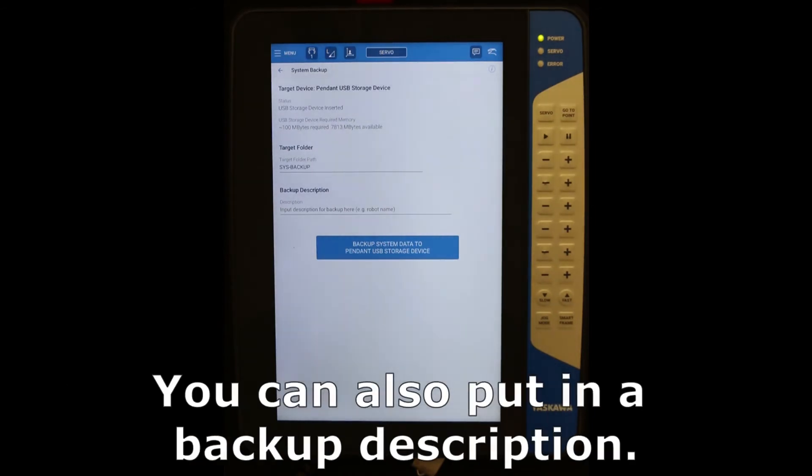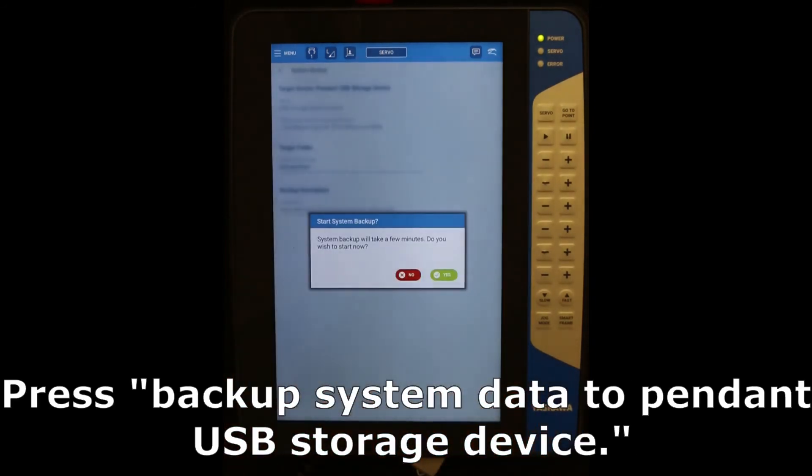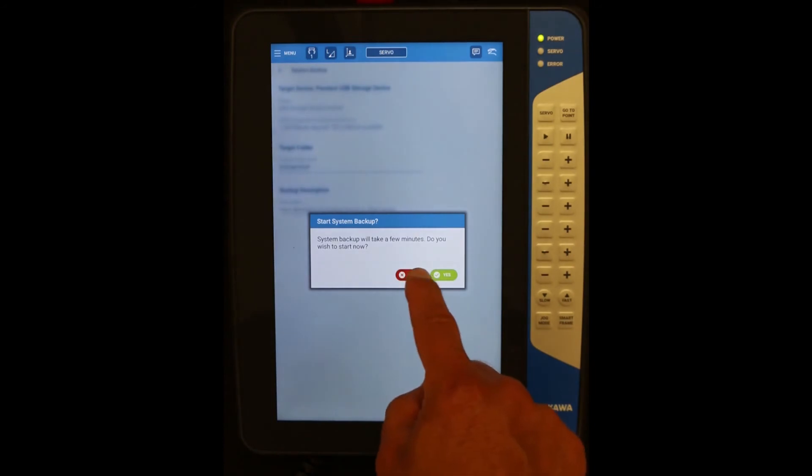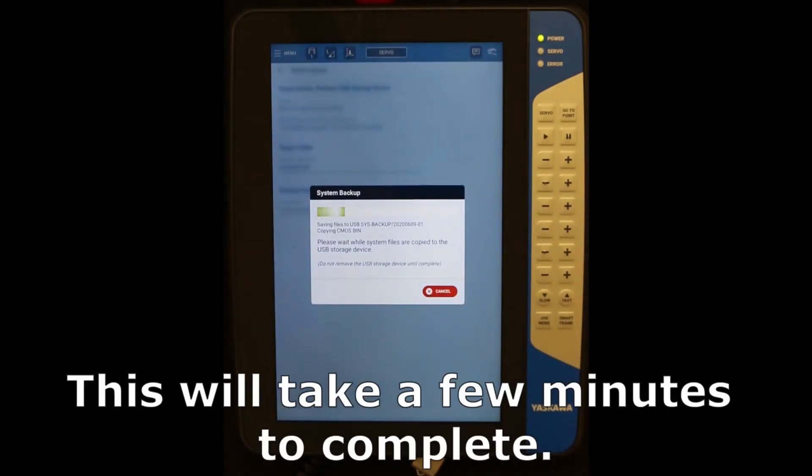You can also put in the backup description. Press backup system data to pendant USB storage device. Confirm the pop-up window. This will take a few minutes to complete.